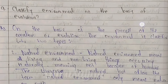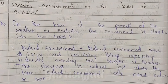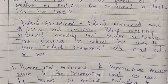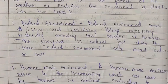Classify environment on the basis of evolution. Environment is classified into two types: natural environment and non-natural, i.e., man-made environment. Natural environment means all living and non-living things occurring naturally — not because of humans. The universe is natural, but often the term natural environment refers only to nature on earth.